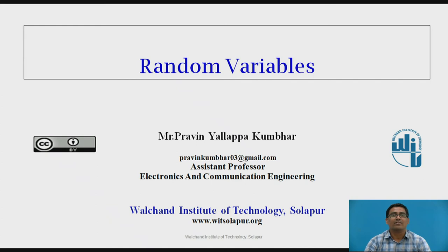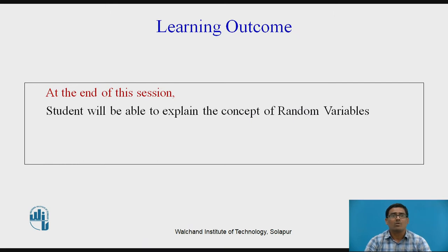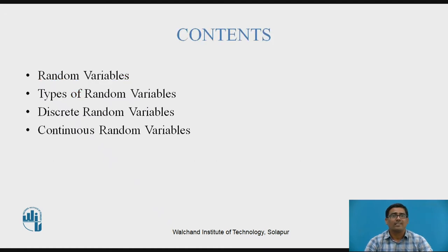Today in this session we want to study random variables. The learning outcome is that at the end of this session students will be able to explain the concept of random variables. The contents cover: first, what is the meaning of random variable; then types of random variables — discrete random variable and continuous random variable.